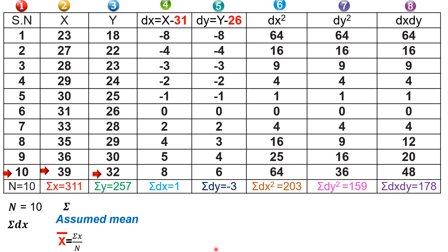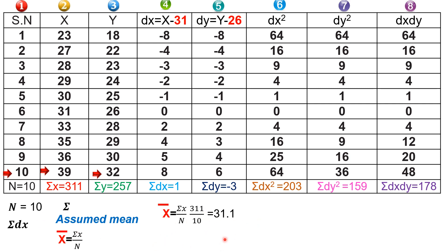To find sigma dx we need the assumed mean. The assumed mean for x is calculated as x-bar equals sigma x divided by n. Sigma x equals 311 and n equals 10, so x-bar equals 311 divided by 10, which gives 31.1. We round this and take the assumed mean for x as 31.